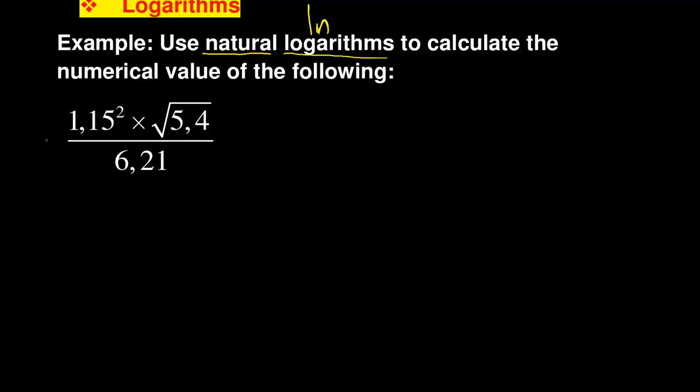You can say let A be equal to this expression that is given, so A equals that. Now from there you can use your natural logarithms. The first thing that is important is to come up with an equation - you can use a letter and that letter is equal to what you're given. Once you have come up with an equation like that, you can therefore introduce ln.